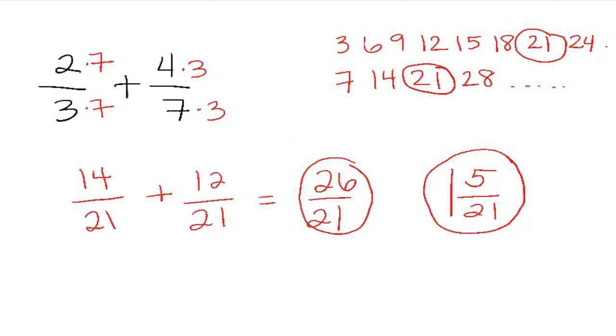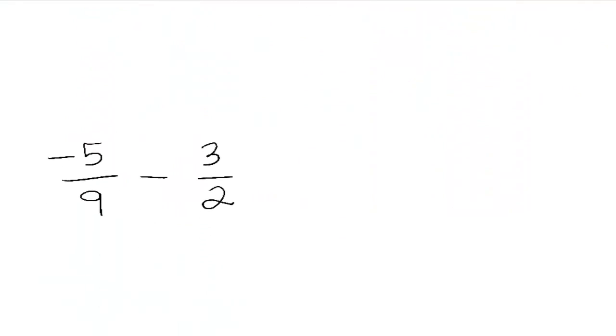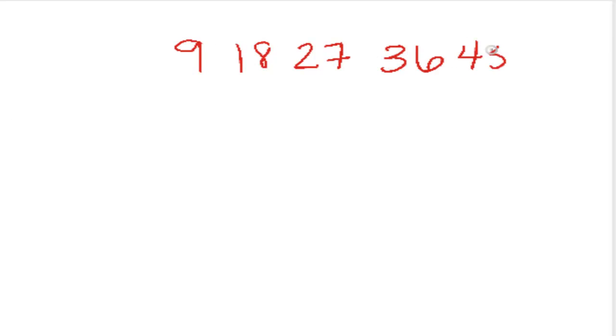And for the last example, let's do a subtraction problem, or a double negative problem. And again, we need to find a common denominator. In this case, the multiples of 9 would be 9, 18, 27, 36, 45, etc.